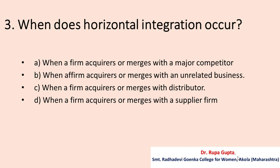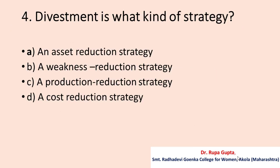Question number three: When does horizontal integration occur? Option A: when a firm acquires or merges with a major competitor. B: when a firm acquires or merges with an unrelated business. C: when a firm acquires or merges with a distributor. D: when a firm acquires or merges with a supplier firm. The correct answer is A, i.e., when a firm acquires or merges with a major competitor.